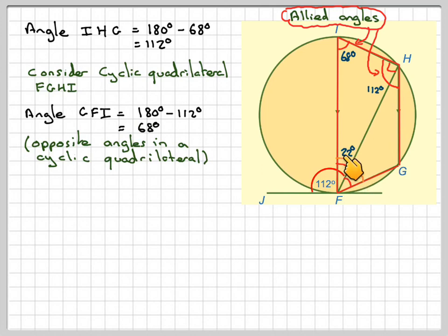So if this is 68, then the angle that we wanted is going to be 68 minus 22, which gives me 46 degrees.